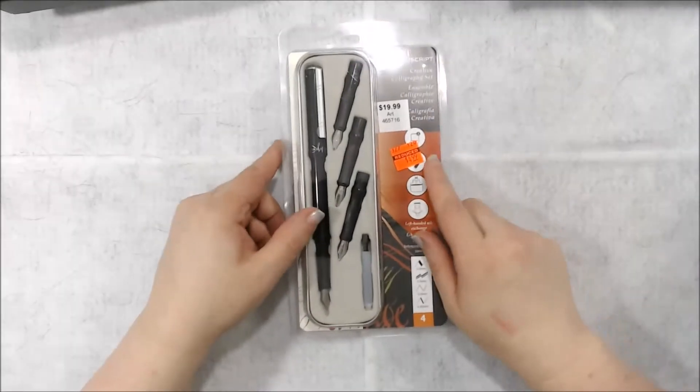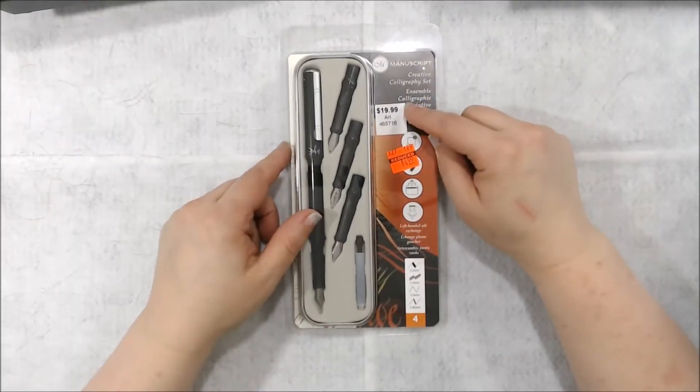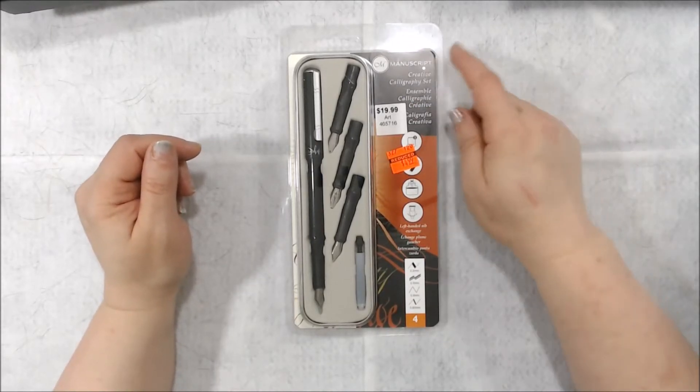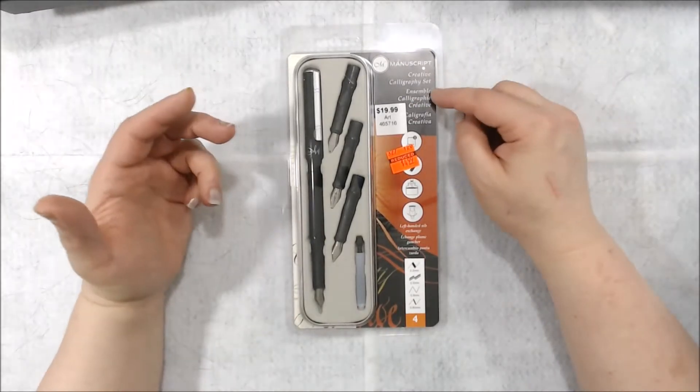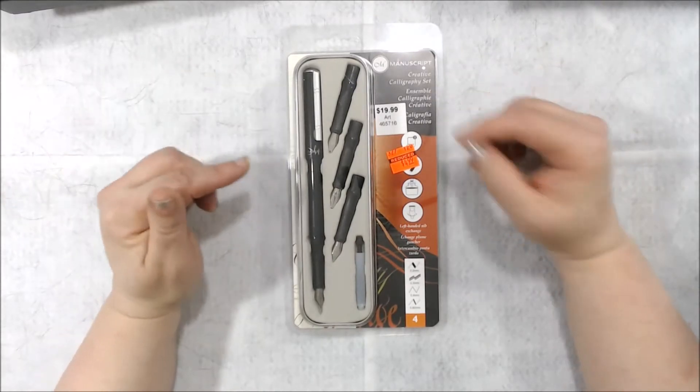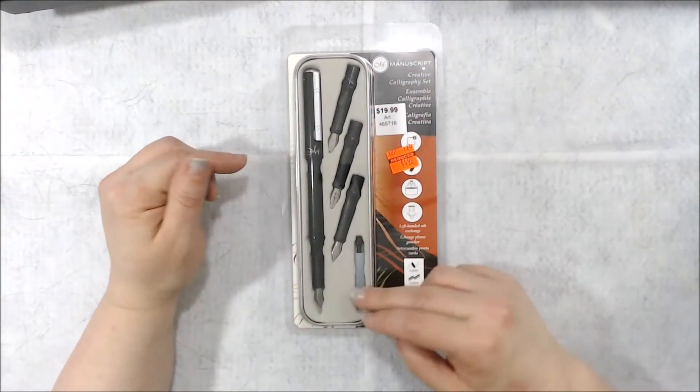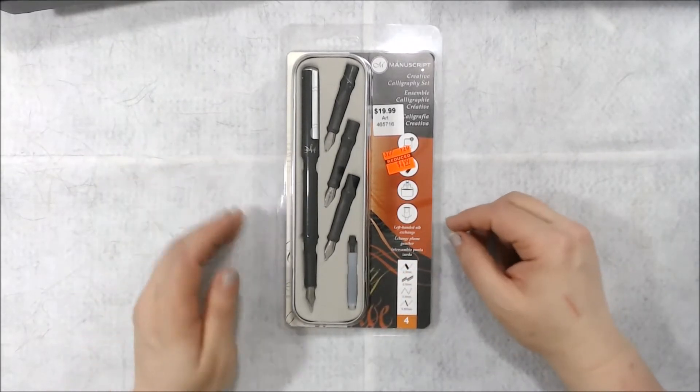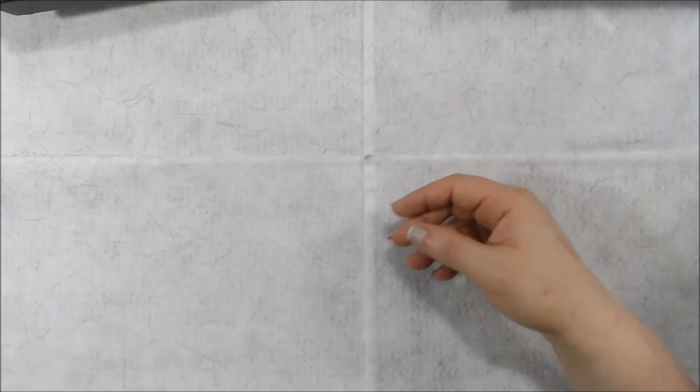Also in the clearance area, I got some things for calligraphy. I found this which is normally $19.99 and it was reduced down to $4.99. It's by Manuscript and it's a creative calligraphy set. Now the best part about this is that you see these three and this is a converter so you can put ink into your pen which will be great in my opinion.